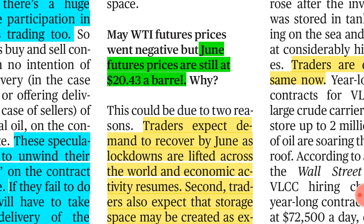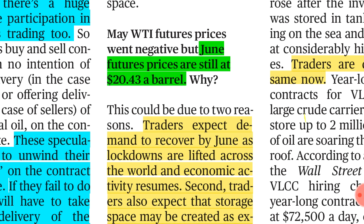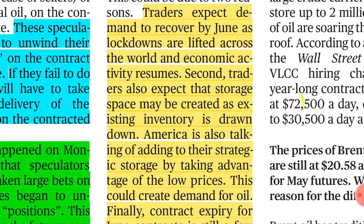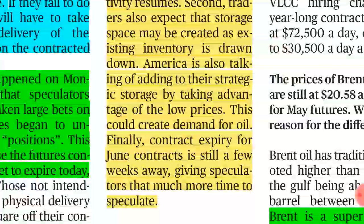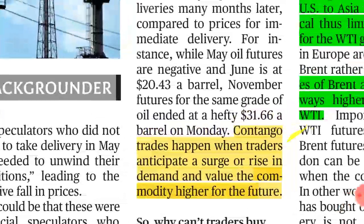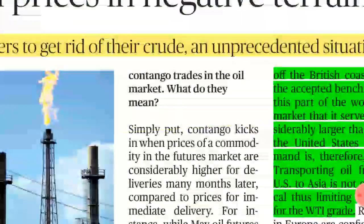June futures are still positive because traders expect demand to recover by June as lockdowns are lifted across the world and economic activities resume. They also expect storage spaces will increase. Additionally, the contract expiry for June contracts is not immediate — for May it was yesterday, causing the sudden crash, but for June the expiry is after some weeks, so traders feel they can decide later.